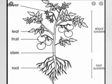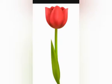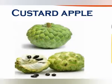Every plant has a root and shoot system. The part of the plant that grows under the ground is the root system. The shoot system means the part of the plant that grows above the ground. It consists of stem, leaf, flower and fruit.